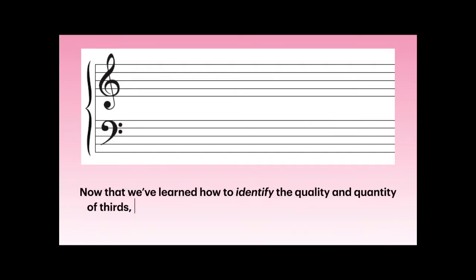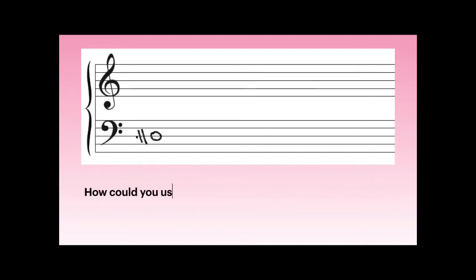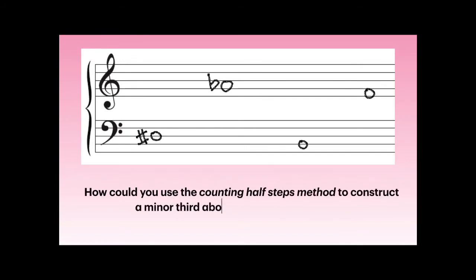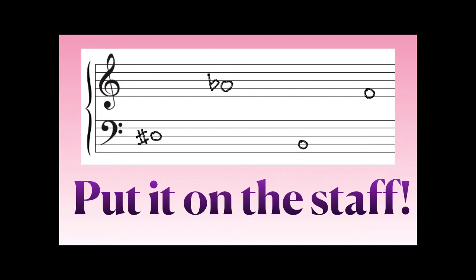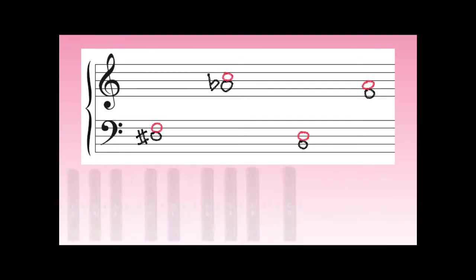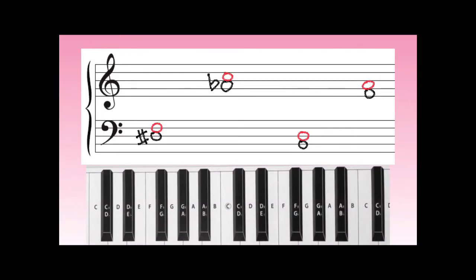Now that we've learned how to identify the quality and quantity of thirds, let's learn how to construct minor and major thirds. How could you use the counting half-steps method to construct a minor third above each of these pitches? Remember the first step: put it on the staff. Because a third is always a line to the neighboring line or a space to the neighboring space, we can do that pretty easily.